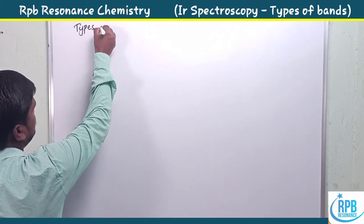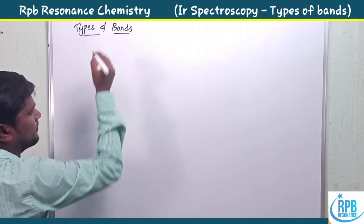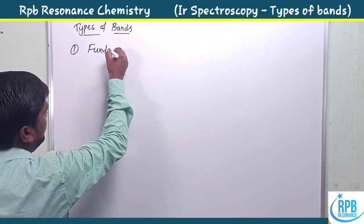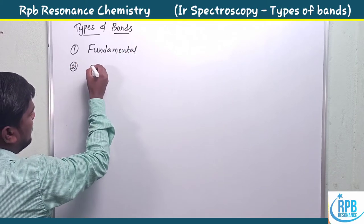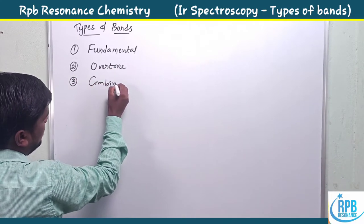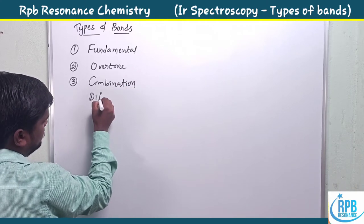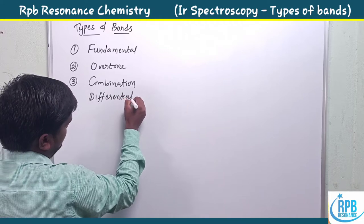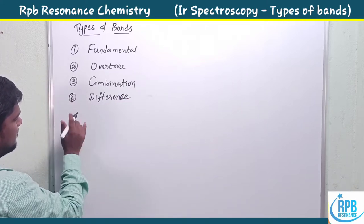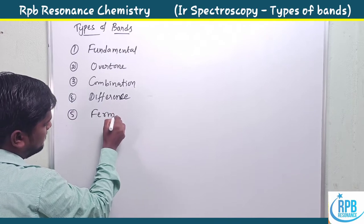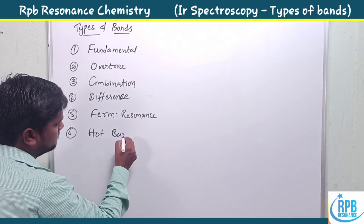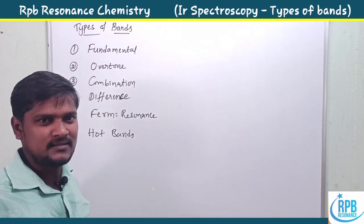Our topic today is types of vibrational bands. Generally, five to six types of vibrational bands are there. The first one is fundamental vibrational bands. The second one is overtone vibrations. The third one is combination tones. The fourth is difference tones. The fifth is Fermi resonance — this is very important for IR spectroscopy. And the sixth one is hot bands.